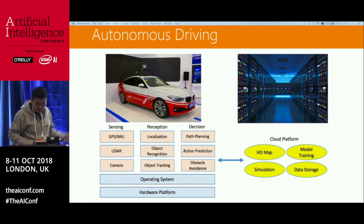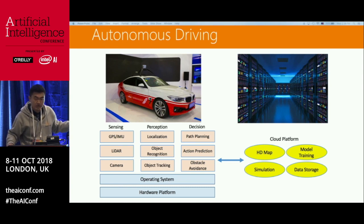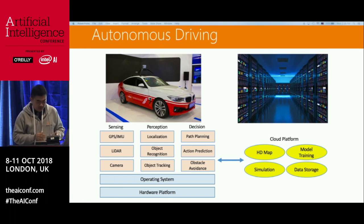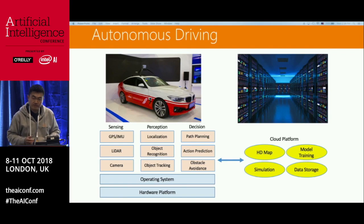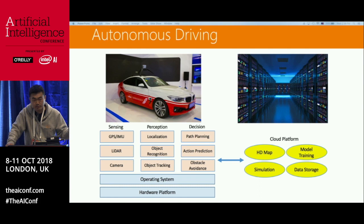Autonomous driving is not really one technology — it's the integration of many pieces of technology. As you can see on the screen, the pink part is the algorithm. There are a lot of algorithms used in autonomous driving. For example, localization: how do you localize your vehicle in real time so you know exactly where the vehicle is? Object recognition: if you see a pedestrian, you have to recognize them so you can avoid them. And then path planning as well.